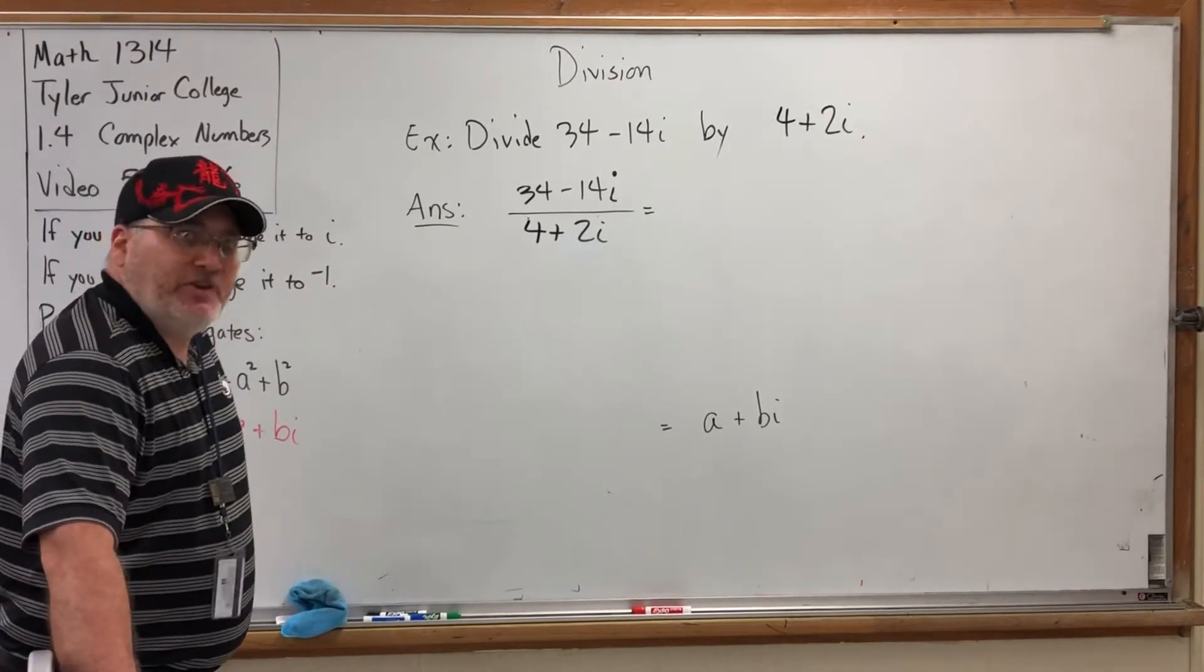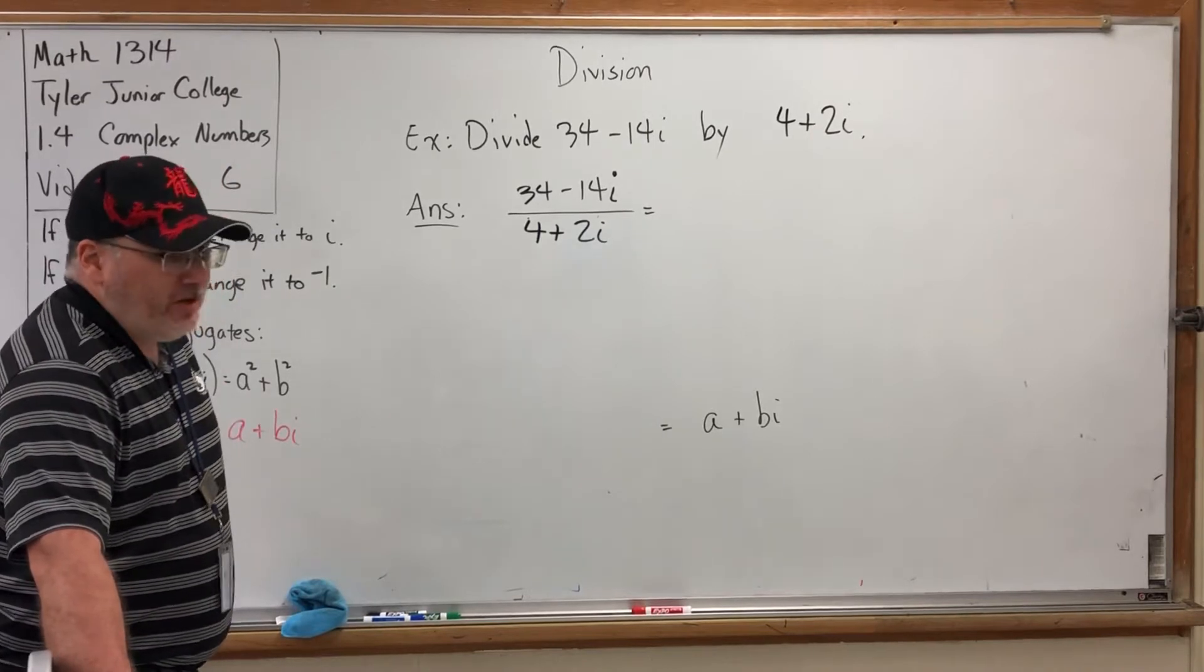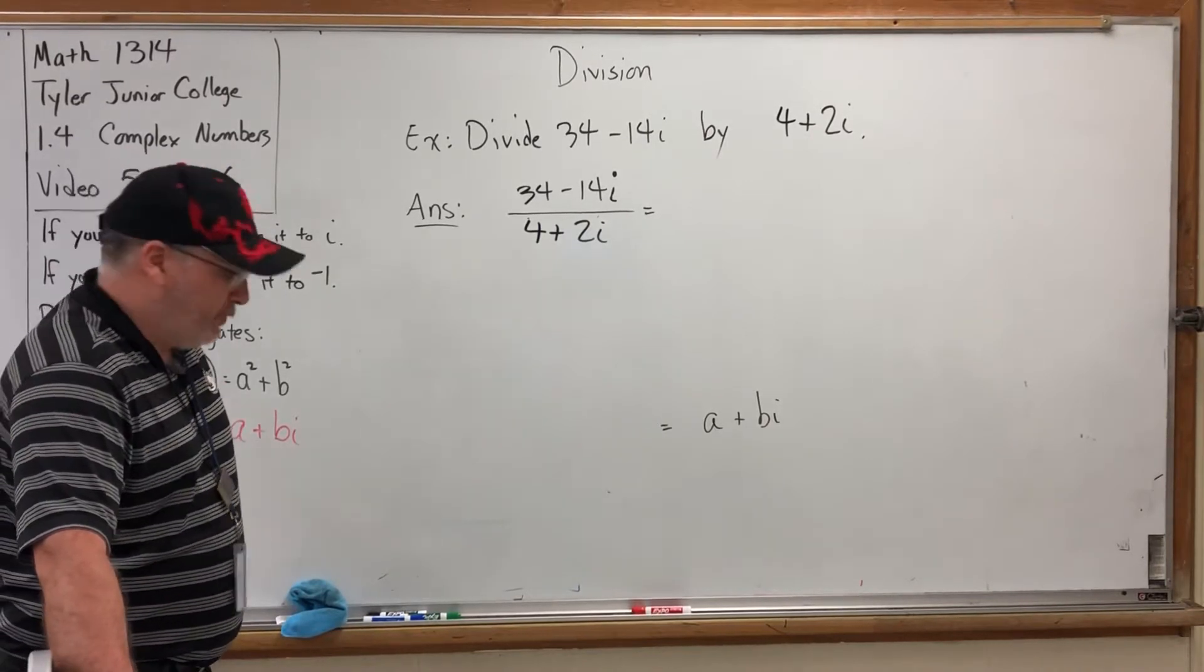So if we can make the i in the denominator disappear, then we're practically done. We split into two fractions and reduce if necessary.